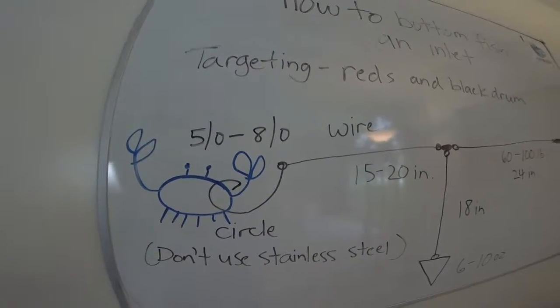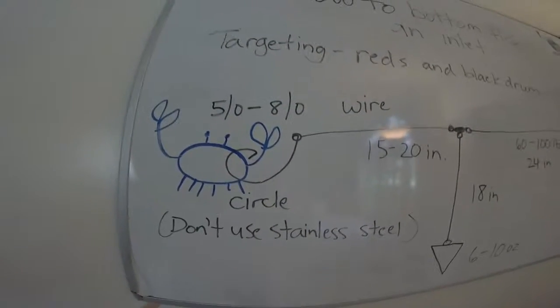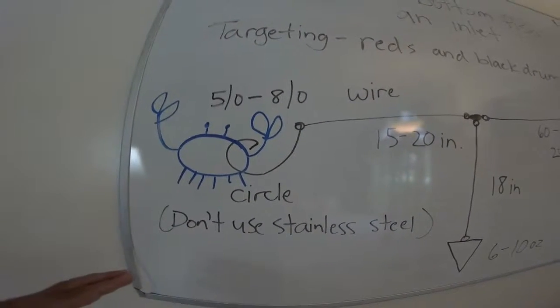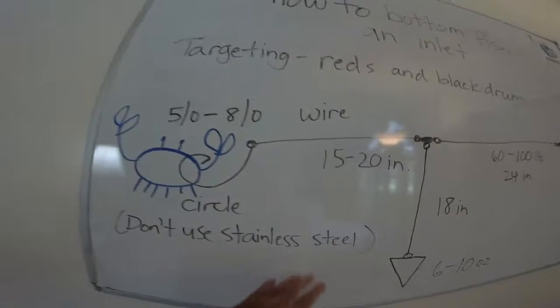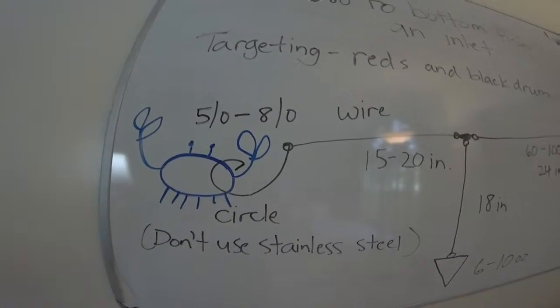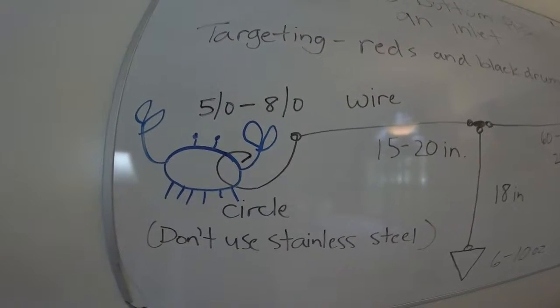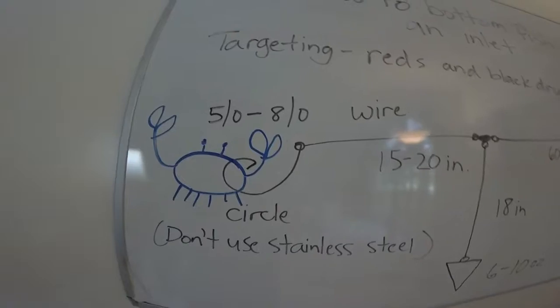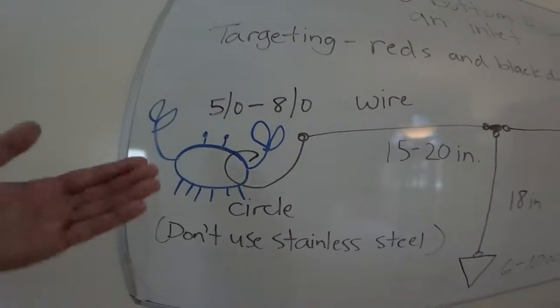And a 5 to 8-aught hook. Make sure it's a circle hook too. Circle hooks are so much more humane than J hooks, especially when you're fishing like this, and don't use a stainless steel one either. They just don't rust out. So if you actually lose the hook, a couple of weeks the thing's probably rusted out. So it's very inconvenient and annoying for the fish, but it's not with them forever.